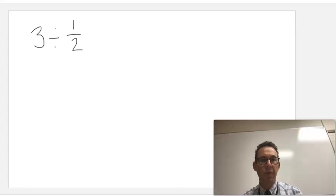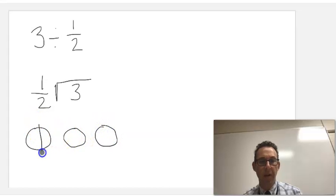And we can think about 3 divided by 1 half the same way by rewriting it like this, and asking, how many times does 1 half go into 3? What that really is asking is, how many 1 half pieces, how many halves are there in 3? So if I had 3 wholes, and I want to know how many halves there are, I can see that there are 1, 2, 3, 4, 5, 6. There are 6 halves in 3.